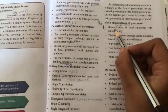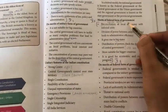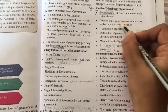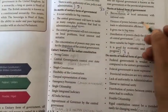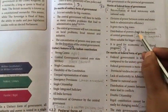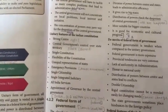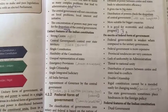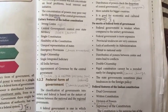Merits of federal form of government: it achieves reconciliation of local autonomy with national unity — there is a balance between local autonomy and national unity. Division of power between center and states leads to administrative efficiency. It gives rise to big states and is more suitable for bigger countries. Distribution of powers checks the despotism of the central government, and it is good for economic and cultural progress.